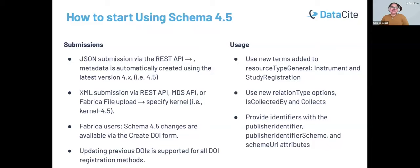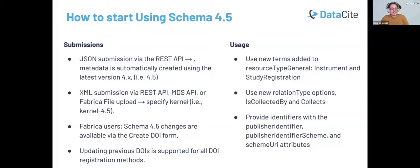We really encourage you to start using the new terms we've introduced, such as instrument and study registration, along with the new relation types such as 'is collected by' or 'collects.' We'd also love to see more publisher identifiers used. We really encourage you to enrich the metadata when you're registering or updating your DOIs. And for repositories still using schema 3, it's important to start using schema 4 — but I'll leave that to Kelly to guide us through.